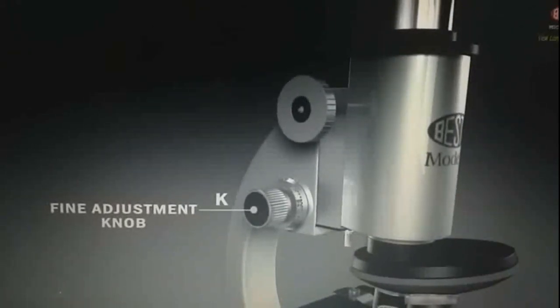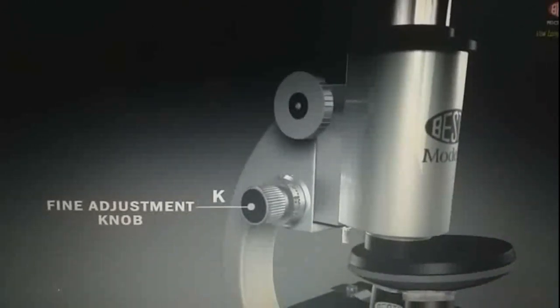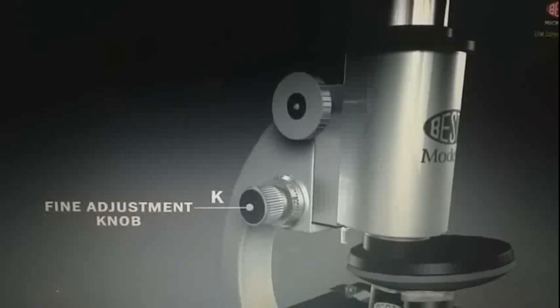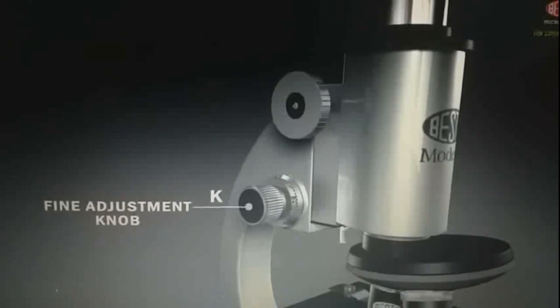K, fine adjustment knob. It is the small knob used to change the position of the body tube by making small adjustments to the focus of your sample.